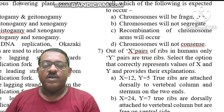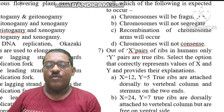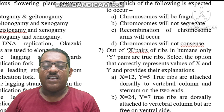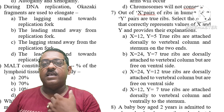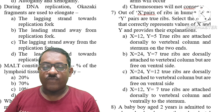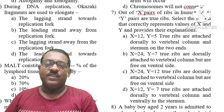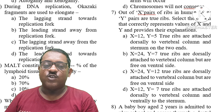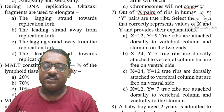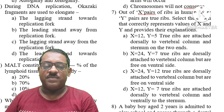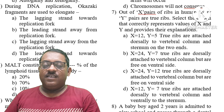Question number 7: Out of X pairs of ribs in humans, only Y pairs are true ribs. The total number is 12 pairs, so X equals 12. There are 7 pairs of true ribs and 3 pairs of false ribs. Y equals 7. True ribs are attached dorsally to the vertebral column and ventrally to the sternum. The right answer is option D.